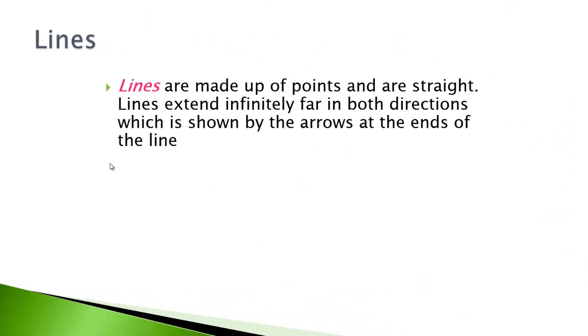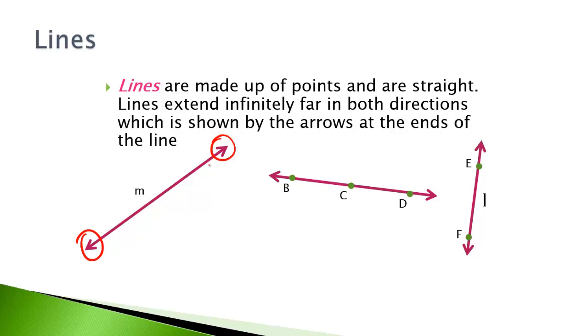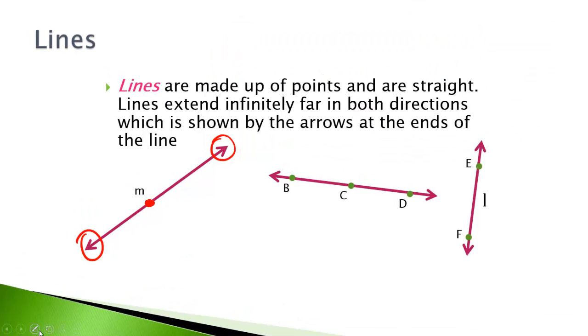Lines. Lines are made up of points and are straight. Lines extend infinitely far in both directions, which is shown by the arrows at the ends of the line. So if you have arrows on both ends, it's definitely a line. Now we can't identify point M on this line because there's no dot. If we had it there, then absolutely we could. But there's no dot on the original line.